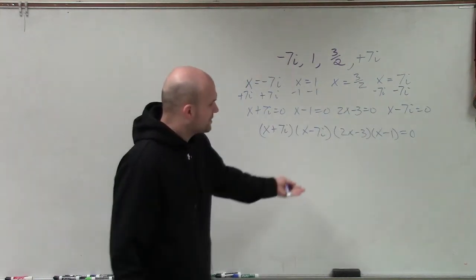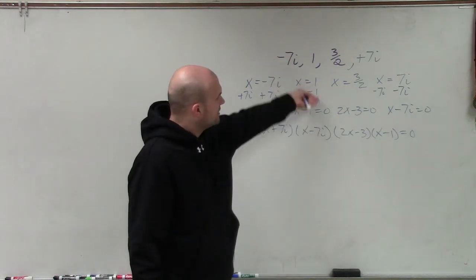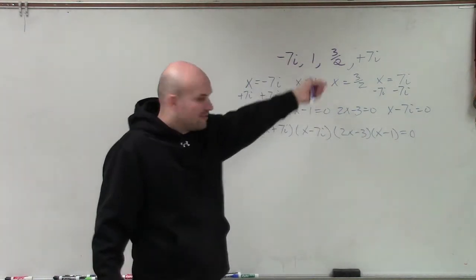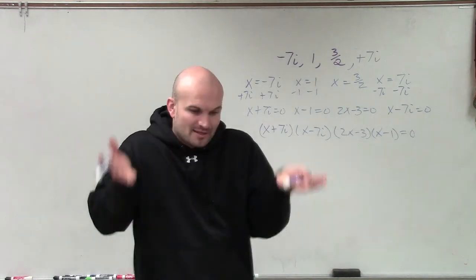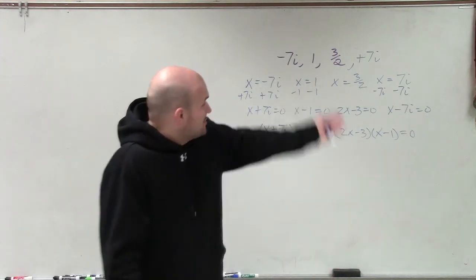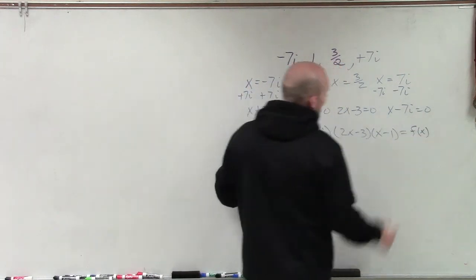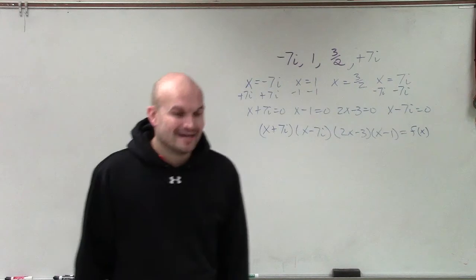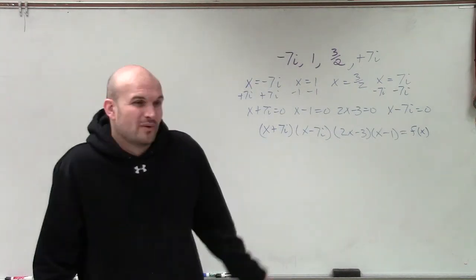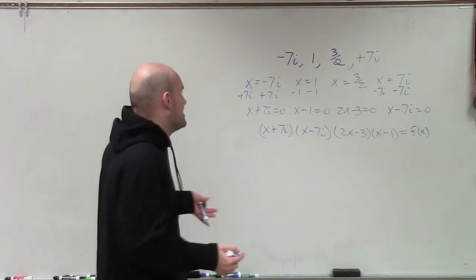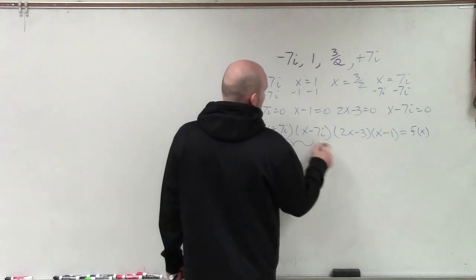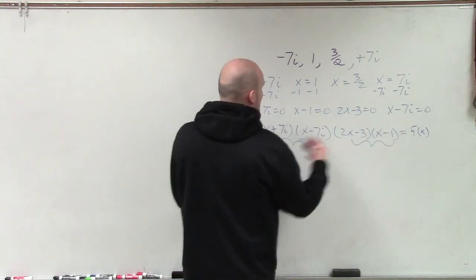All right, so again, if we were working this problem backwards, you could see that working it up, that is how I'd solve it by starting off with my zero product property. But we're working the problem down. And we don't want to find the zeros. Because we know the zeros, we want to find the function. So when you have four binomials multiplied by each other, don't get overwhelmed. Just work at it one step at a time. So what I'll do is I'll multiply these first. Then I'll multiply these two. Then I'll multiply them together.